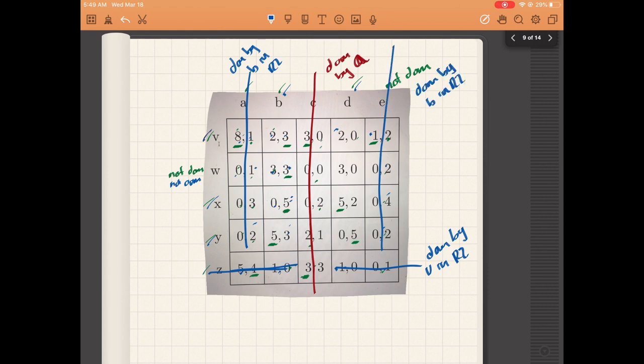Now we only have two columns left for the column player. Going back to the row player, v is not a best response anymore and is dominated by w. w is a best response, x is not dominated by w or y. At this point, there are no more dominated actions for either player, so we're finished.